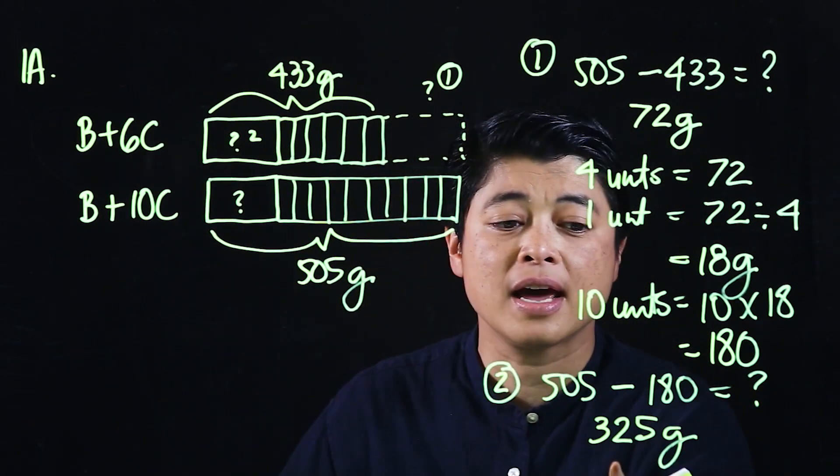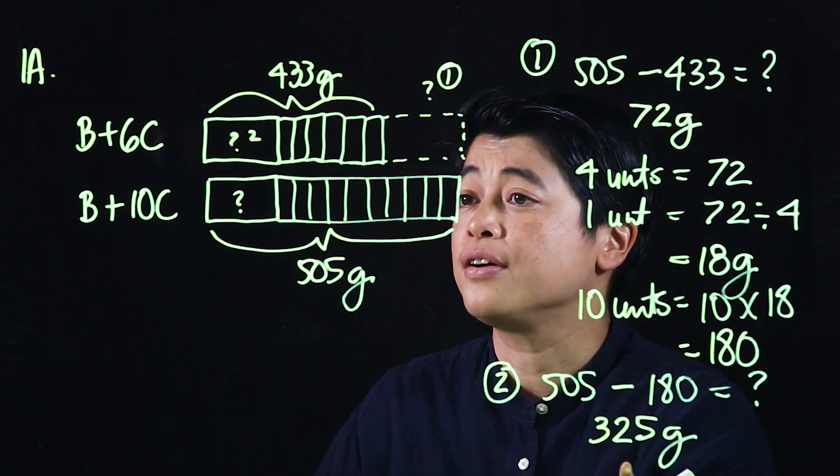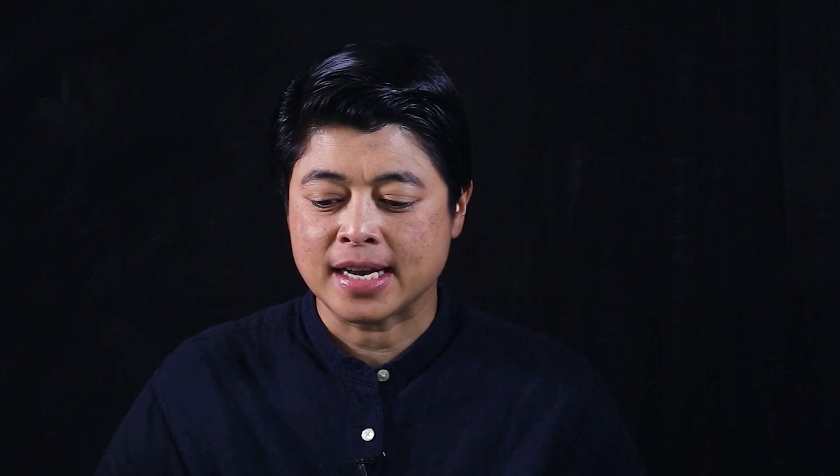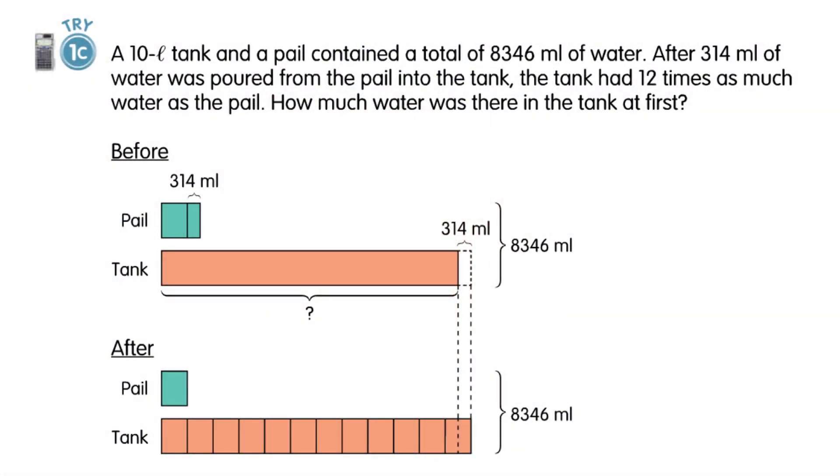Another problem I'll be discussing is on page 48. It says a 10-liter truck tank and a pail contained a total of 8,346 milliliters of water. The 10 liters is irrelevant. After 314 milliliters of water was poured from the pail onto the tank, the tank had 12 times as much water as the pail.